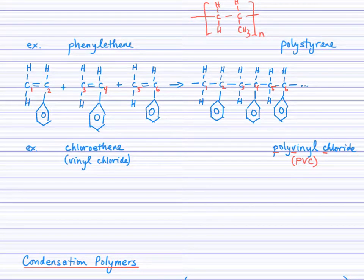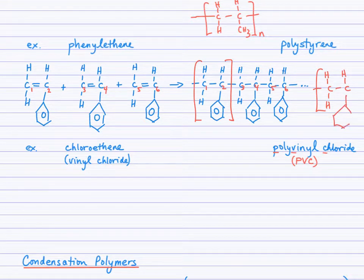So here's our phenylethene monomers. And you can see that it produces polystyrene, which is a polymer having a benzene ring off of every other carbon. And so with our polymer notation, we have two carbons and then the benzene ring off of the second carbon. So this bracket should actually drop down there.